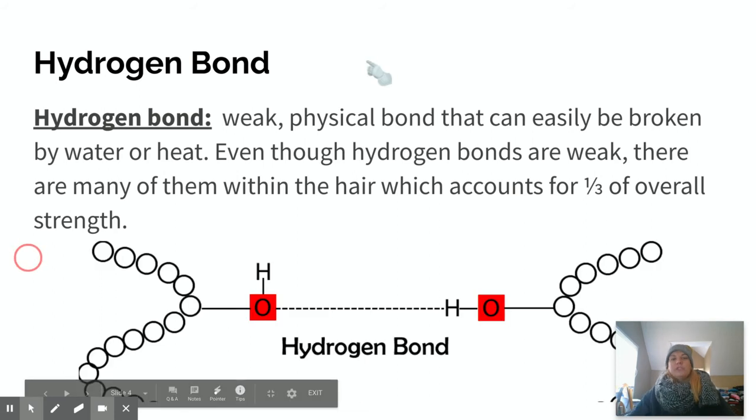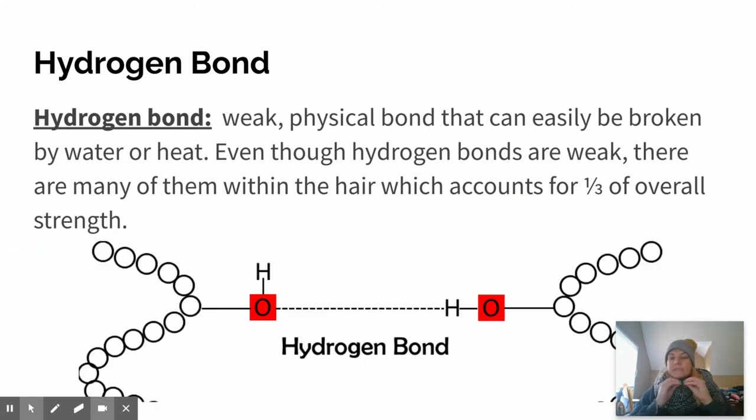So a hydrogen bond is a weak physical bond that can easily be broken by water and heat—like when you wash your hair, blow dry your hair, straighten your hair, curl your hair, what have you. Even though hydrogen bonds are weak, there are many of them within the hair, and it accounts for one third of your overall hair strength.